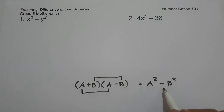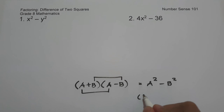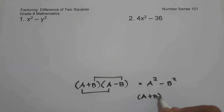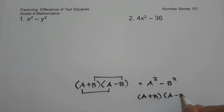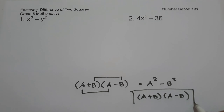So if you are going to write the factored form of a squared minus b squared, that is a plus b times a minus b, and this will be our answer.